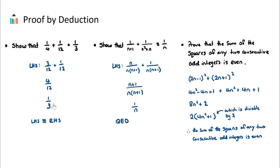Now 4 over 12 simplifies to 1 over 3, which was our right-hand side. So we have shown that the left-hand side equals the right-hand side. Once you reach this step in your proof, you have two options: you can state that the left-hand side is equivalent to the right-hand side, or alternatively you can write QED — a Latin phrase meaning 'what was to be demonstrated.' Note that we can't move things across the equal sign in these types of questions; that's a rule we can't break.